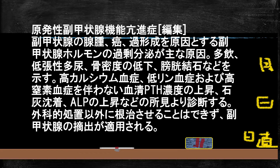まず一つ目、原発性副甲状腺機能亢進症です。副甲状腺自体に問題があり、良性腫瘍、腺腫、悪性腫瘍、過形成などが原因で副甲状腺ホルモンが過剰に分泌されます。治療は外科的に腫瘍を切除することです。症状としては多尿、骨密度の低下、膀胱結石などが出ます。